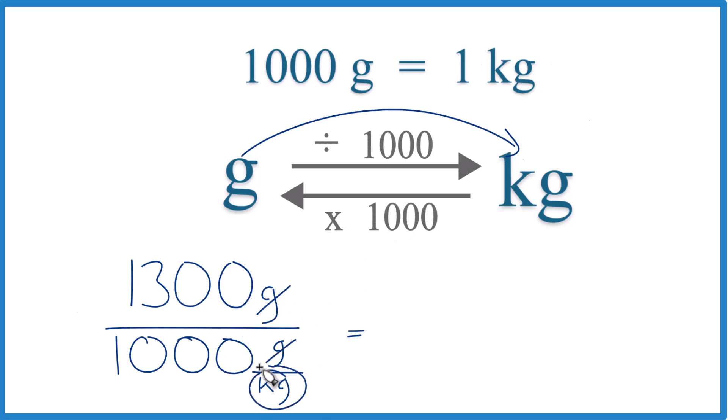So let's move our decimal place 1, 2, 3. So this is just 1. And 1, 2, 3, we end up with 1.3 kilograms. So 1,300 grams equals 1.3 kilograms.